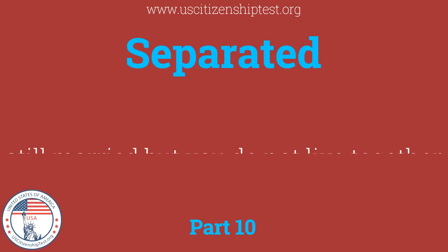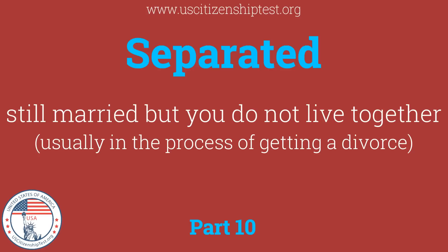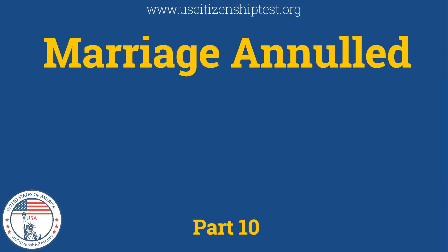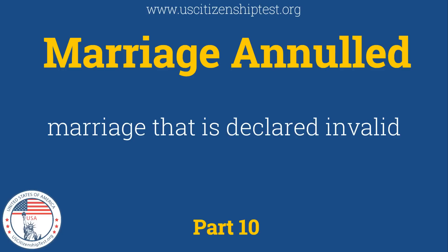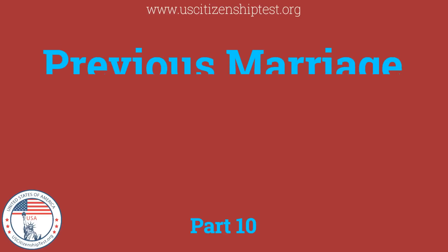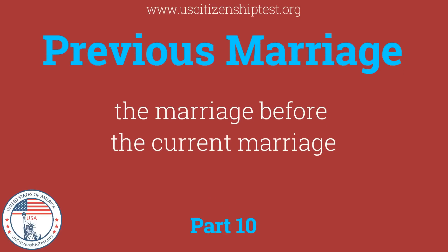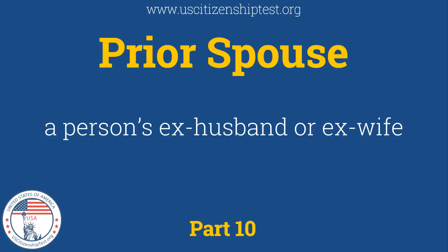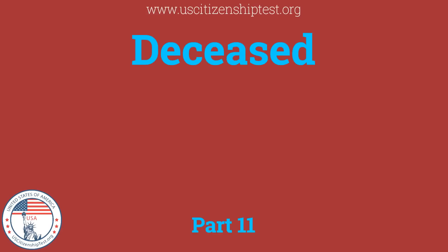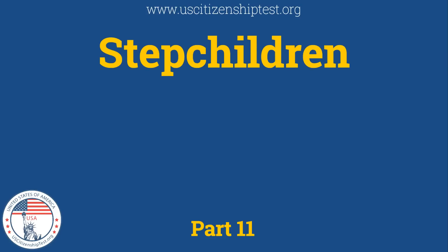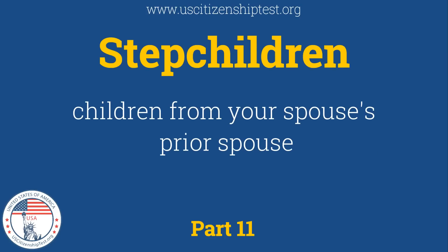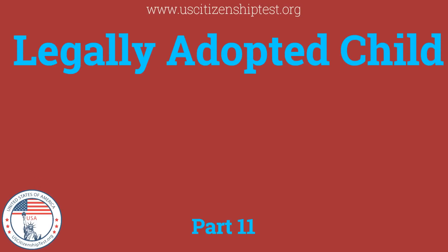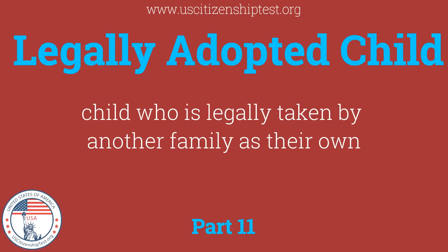Separated: Still married, but you do not live together. Marriage annulled: Marriage that is declared invalid. Previous marriage: The marriage before the current marriage. Prior spouse: A person's ex-husband or ex-wife. Deceased: Died. Stepchildren: Children from your spouse's prior spouse. Legally adopted child: Child who is legally taken by another family as their own.